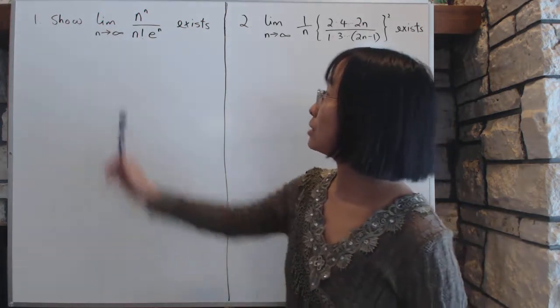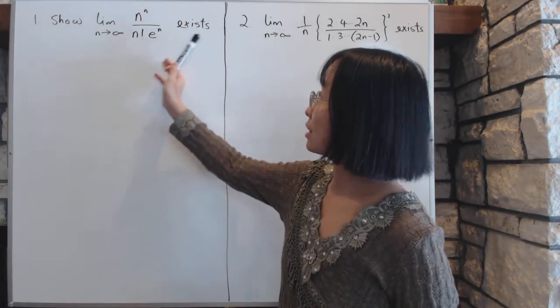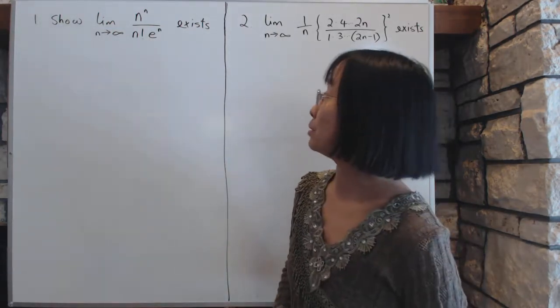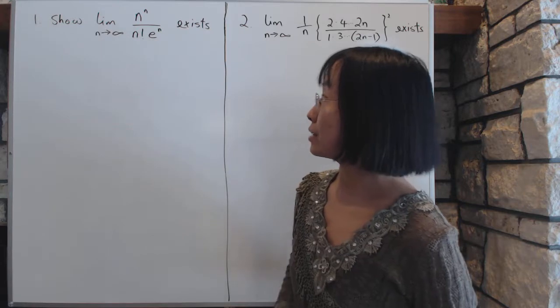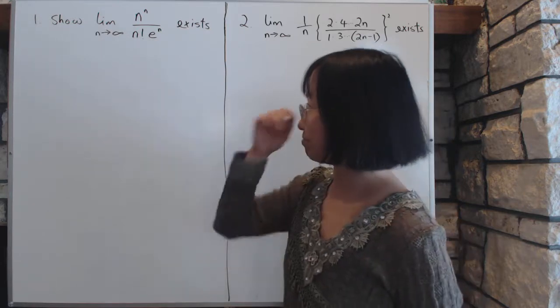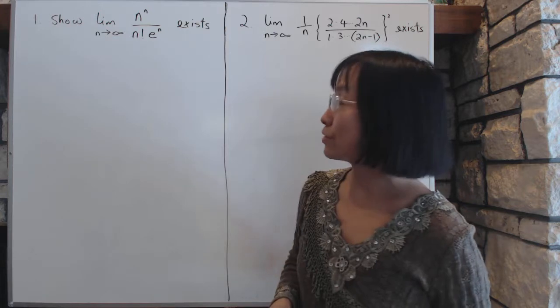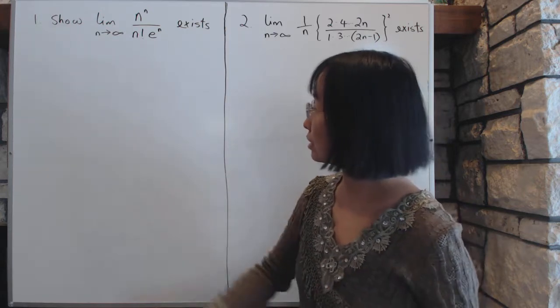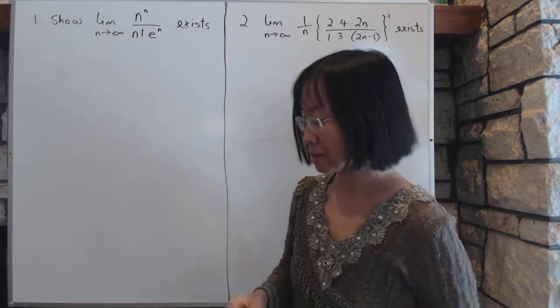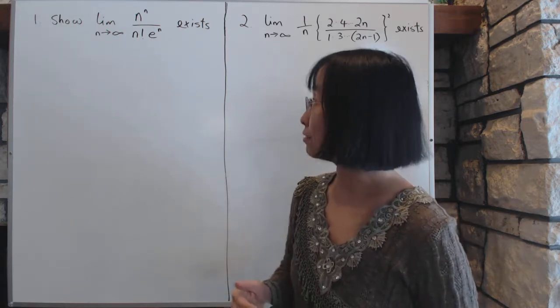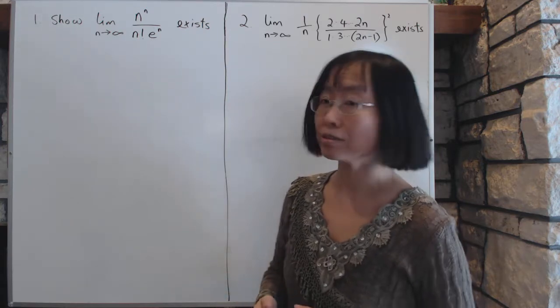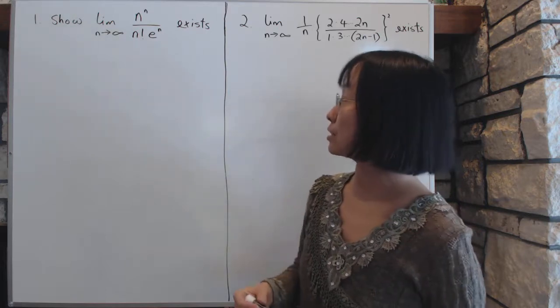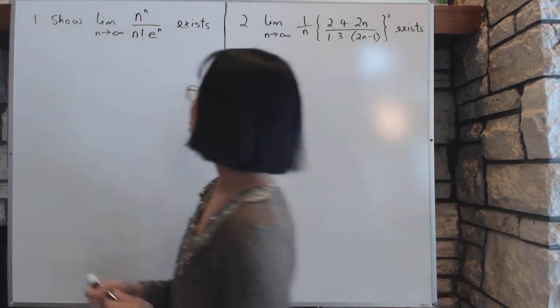Problem 1: show the limit of this thing exists. You don't have to calculate the limit, just show that the limit does exist. The problem looks very complicated. You have n to the power of n, n factorial, e to the power of n, and all that stuff. How will we show that it exists? First, we will show that it is a decreasing sequence, and this is how we will go about it.